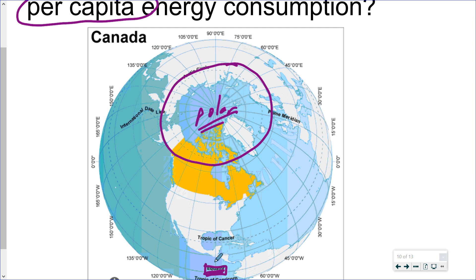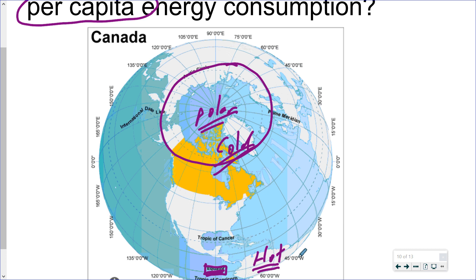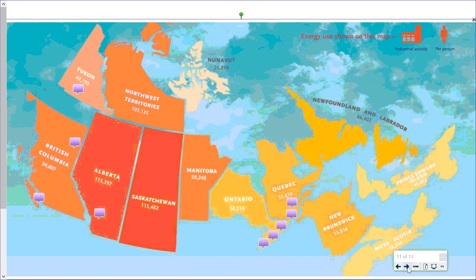However, you also need to realize that countries close to or on the equator have the opposite problem. For us it's cold for a large portion of the year; along the equator it's hot for a large portion of the year. To deal with the cold, we need furnaces and heating; along the equator, they need air conditioning and refrigeration — so there's a bit of a trade-off. So this is very complicated. It's not just one thing — it's not just who produces the most energy, not just temperature, not just technology. It's those combined with probably any number of other factors.